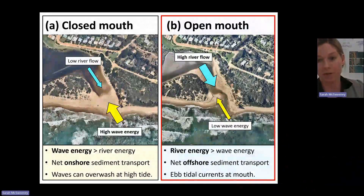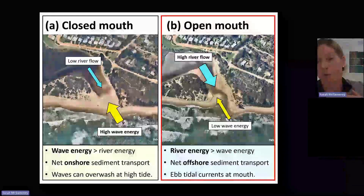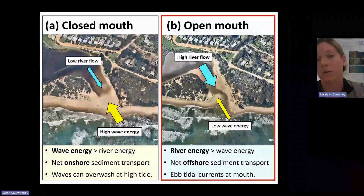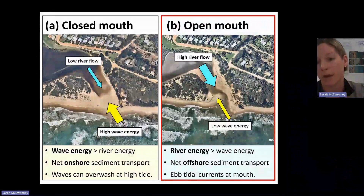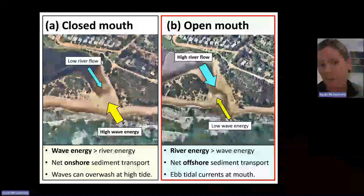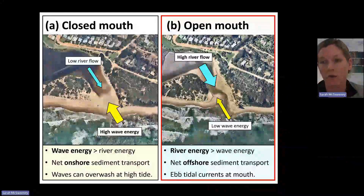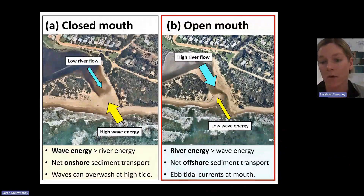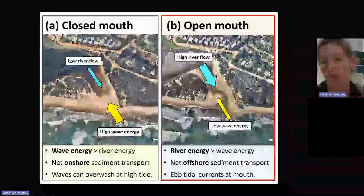Our ebbing tides — our outgoing tides — if they've pushed up into the lagoon and then are going back to sea, those currents can concentrate at the mouth and act to scour out the entrance.